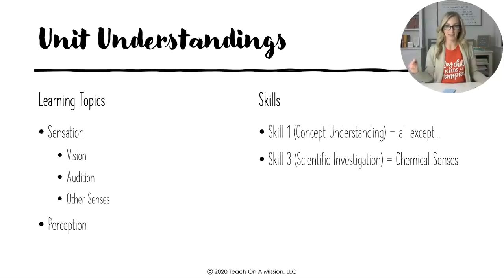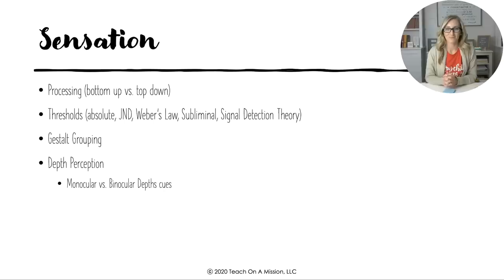Chemical senses. Chemical senses being smell and taste. It's skill three, which is scientific investigation, being able to analyze psychological research studies. So this could very much be on that second FRQ, and be ready to analyze some of the research and apply your knowledge.